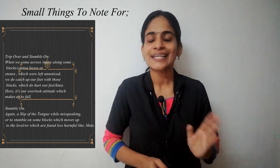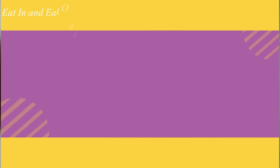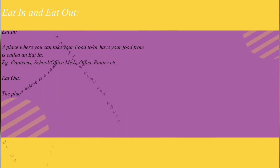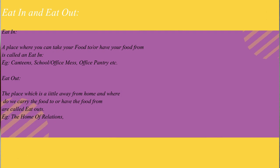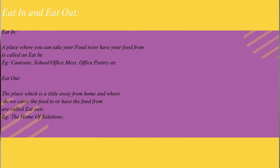Now let us move to the next point — eat-in and eat-out. Eat-in and eat-out are phrasal verbs that come with eating habits. The place where you go and have your dinner or lunch in a comfortable manner — we call those kinds of places eat-ins. What about eat-out? A place that is a little away from your home, whether a small eatery or a restaurant — such places are called eat-outs.